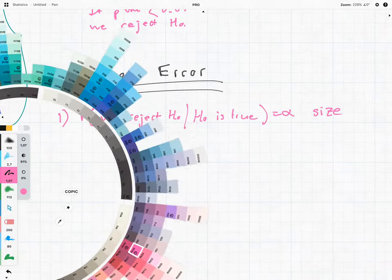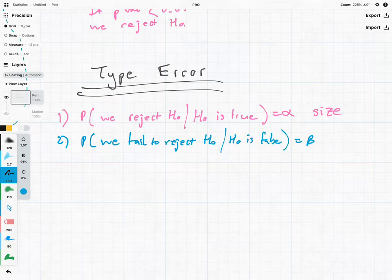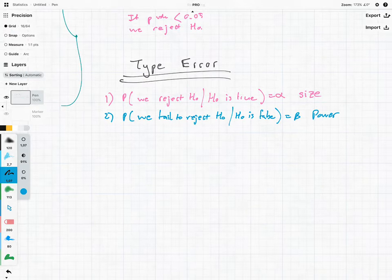Error number two is the probability that we fail to reject the null hypothesis when in fact the null hypothesis is actually false. This is known as beta or the power of the test.